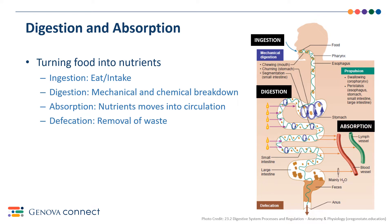Absorption is the process of moving the nutrients from the gastrointestinal tract into our blood circulatory system to be distributed and used by the body. This happens within the small intestines, the section of the GI tract found after the stomach. If you have a condition or prior surgery that impacted your ability to absorb food, then you will have less nutrients for the body to use. Nutrients are basically your vitamins and minerals that are critical for proper function.